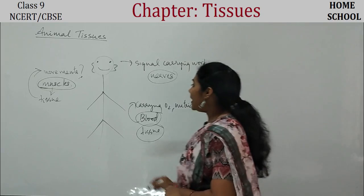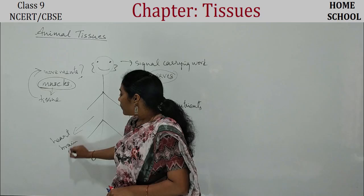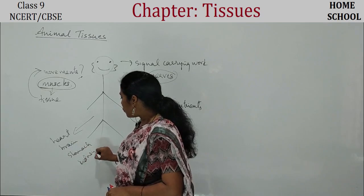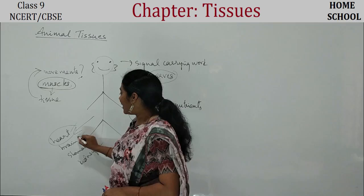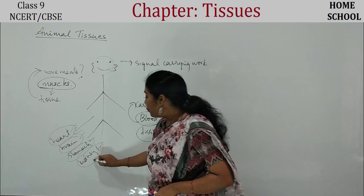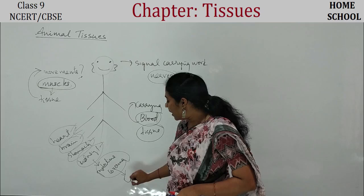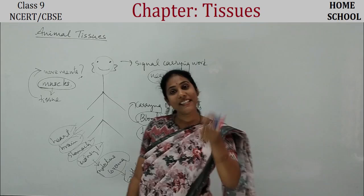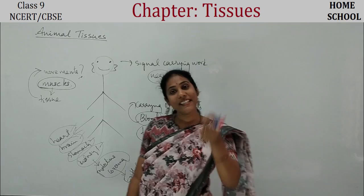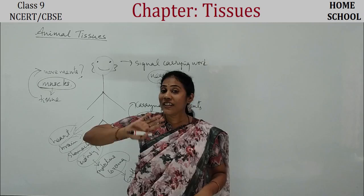We have so many organs inside — heart, brain, stomach, kidneys — and each organ will do some job. They have to be protected with a protective covering. Bones and muscles also need protection. There is a tissue called epithelium that provides this protective covering. So our animal tissues are divided into four types.